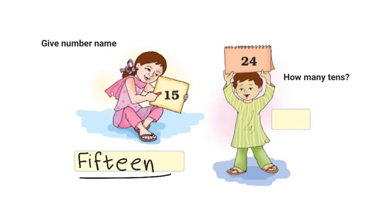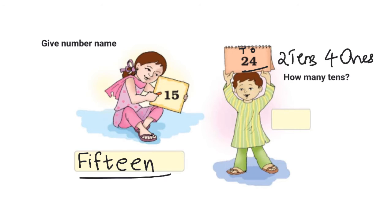Now, in this number 24, how many tens do I see? I know that this is the ones place and this is the tens place. In the number 24, there are 4 ones and 2 tens. So how many tens do I have? I have 2 tens.